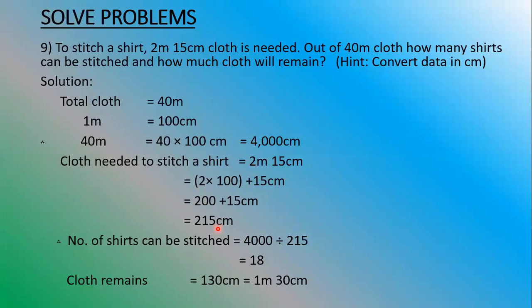Now our question is: how many shirts can be stitched from 40m, that is 4000cm of cloth? The number of shirts that can be stitched equals total cloth divided by cloth needed per shirt. So 4000 divided by 215. Take out your rough book and write down this calculation.